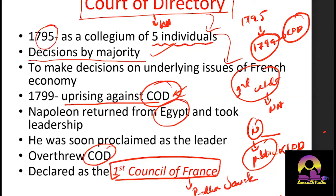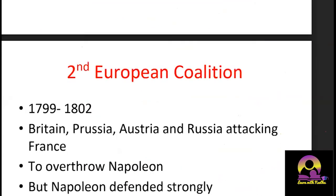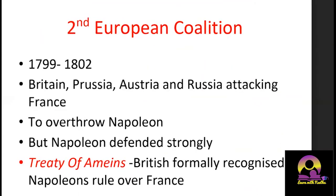Napoleon declared himself the First Consul of France — comparable to a Prime Minister. After the First Coalition war, he was just a soldier whose leadership was recognized. Then the Court of Directory happened in between, he went to Egypt for some purpose, came back, led the uprising, and the people saw him as the solution to their problems. He became the leader of France.